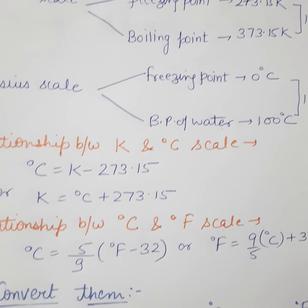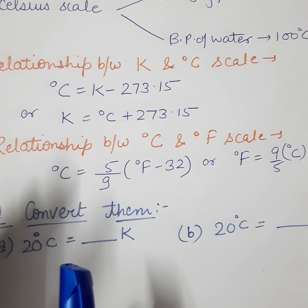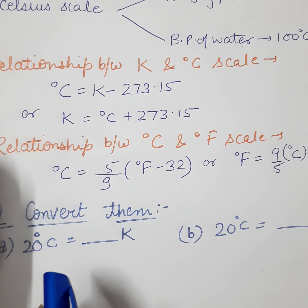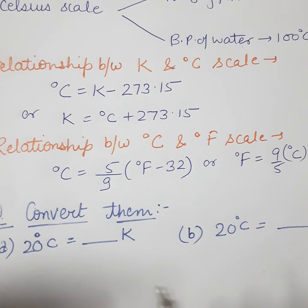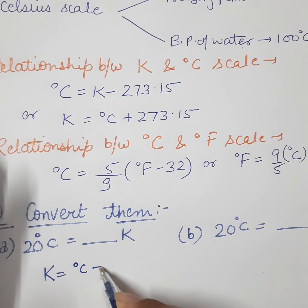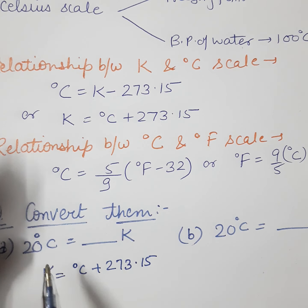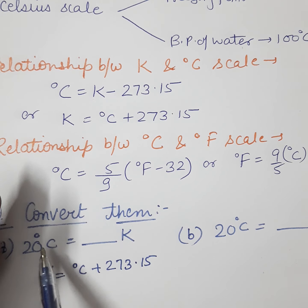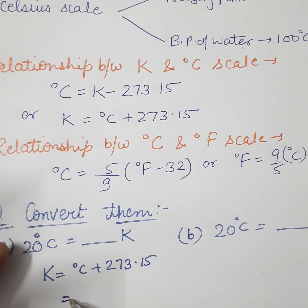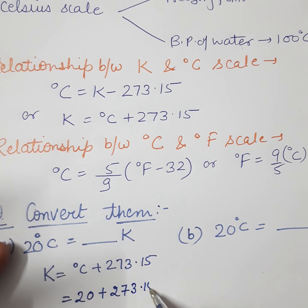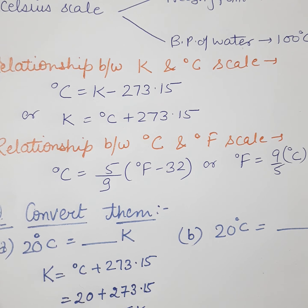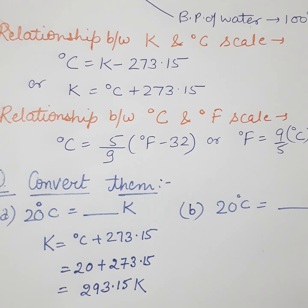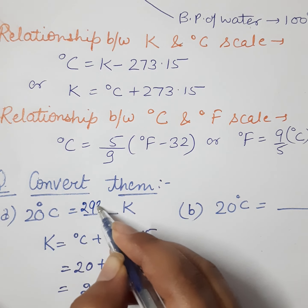Let's take examples converting temperatures. First: convert 20°C into Kelvin. The relationship is K = °C + 273.15. Substituting: K = 20 + 273.15 = 293.15 Kelvin. So 20°C converts to 293.15 K.